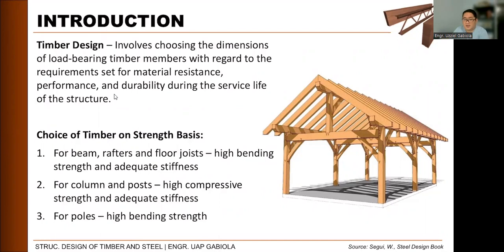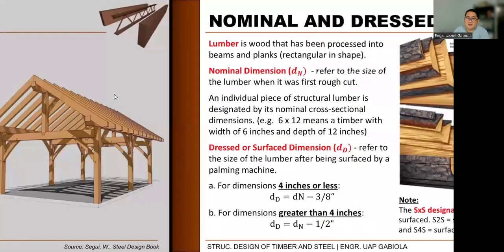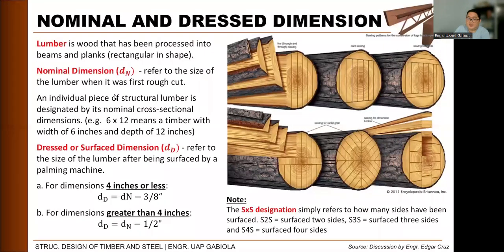In structural timber, we have what is called nominal and dressed dimension. When we cut a tree trunk into a structural member, it is called lumber. Lumber is wood that has been processed into beams and planks, essentially rectangular in shape. The figure shows various ways these planks can be cut from the trunk, and depending on the cut, the grain direction will differ.